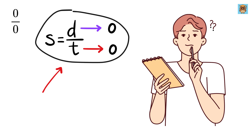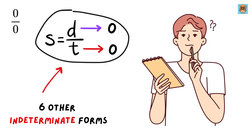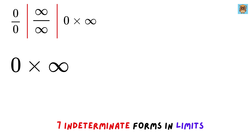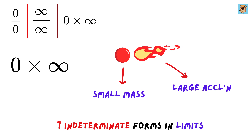Now, apart from 0 over 0, there are six other indeterminate forms where limits step in to resolve ambiguity. Infinity over infinity — this happens when both the numerator and denominator of a fraction grow infinitely large. Then, 0 times infinity — for example, in physics, imagine a tiny mass accelerating infinitely fast. Does the product result in something meaningful?